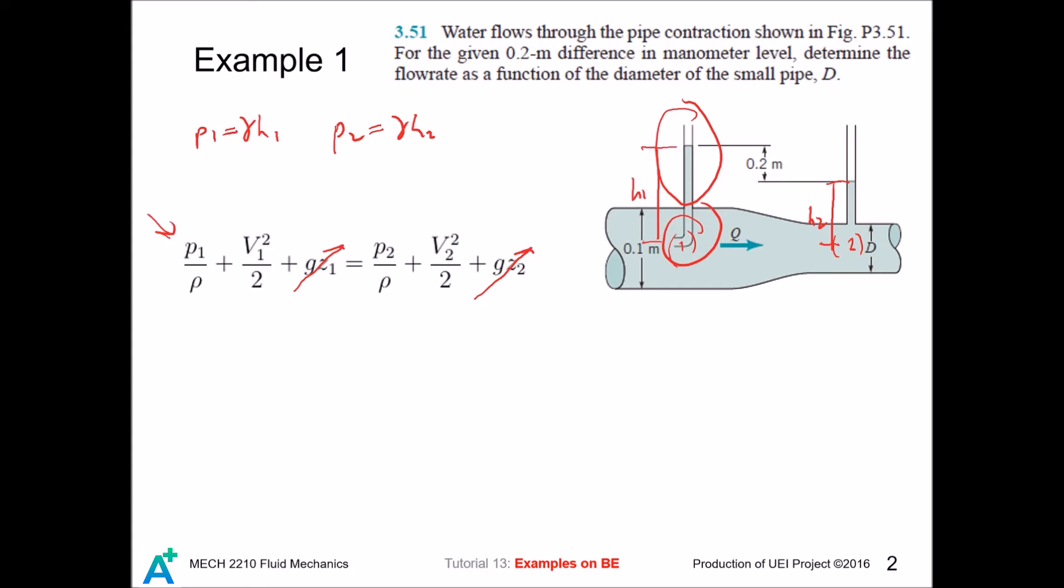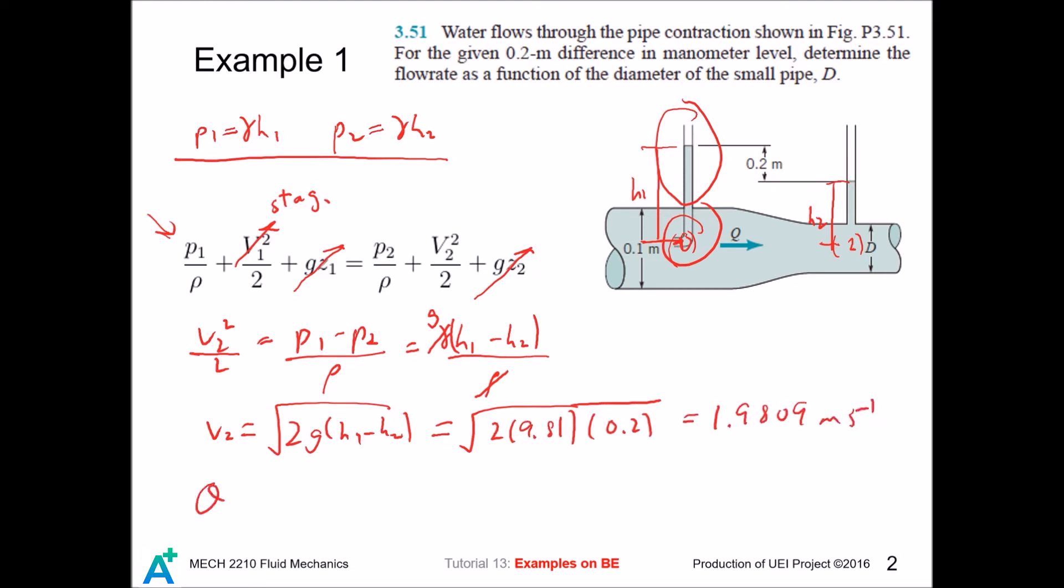Actually, point 1 here is the stagnation point. You can imagine that the fluid comes here and then gets trapped inside. So this one also cancels out. Then we do some simplification and plug in the previous results. We cancel this out and this becomes g. So we can solve for v2. And then we plug it in and then we can find the flow rate. And then we are done with this question.